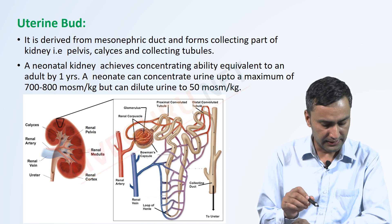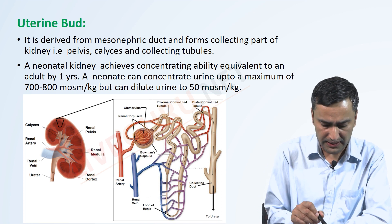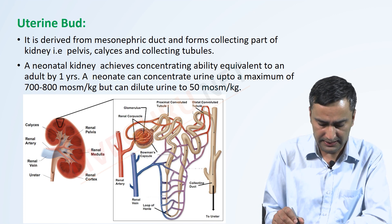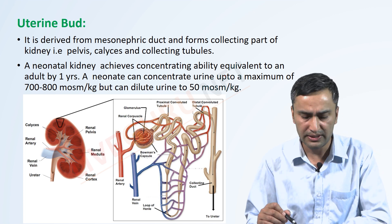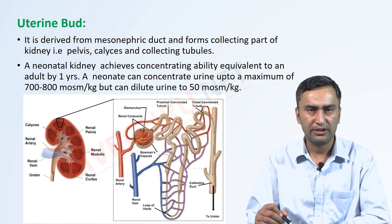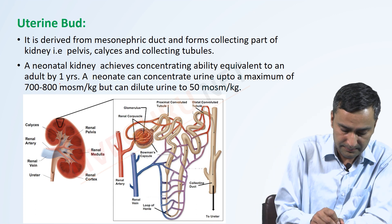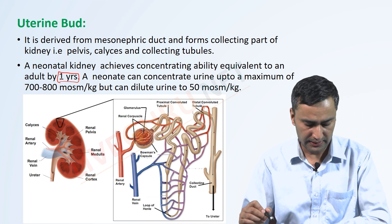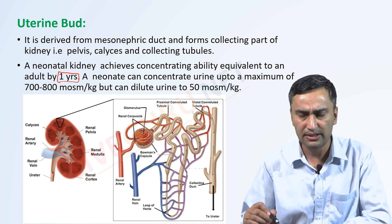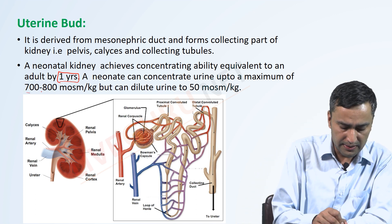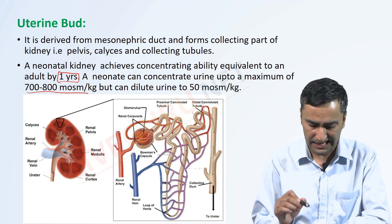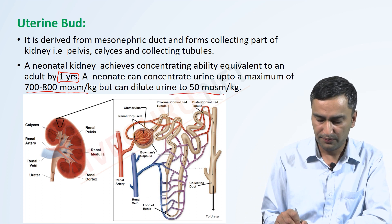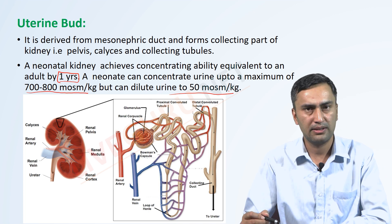There is another important fact which may be asked in the examination: the neonatal kidney achieves the concentrating ability equivalent to an adult by one year. This is an important point. The neonate can concentrate urine up to a maximum of 700 to 800 milliosmol per kg, but can dilute urine up to 50 milliosmol per kg.